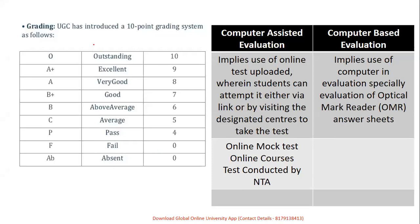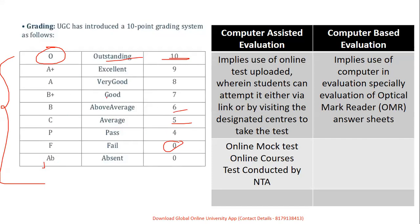Grading system: O is outstanding with grade point 10; A+ is excellent with 9; A is very good with 8; B+ is good with 7; B is above average with 6; C is average with 5; P is pass with 4; F is fail with 0. Computer-assisted evaluation is like online examination with a link given to students — NTA UGC NET is an online examination at specific centers. Computer-based evaluation happens with OMR sheets (optical mark reader), which are assessed by technology.